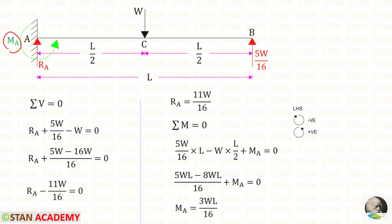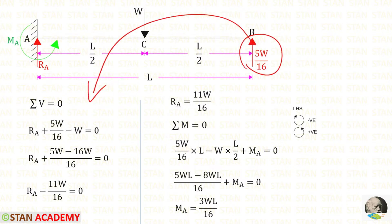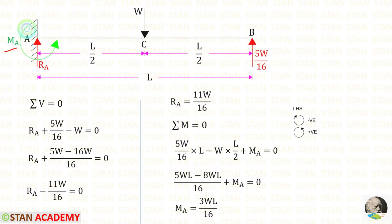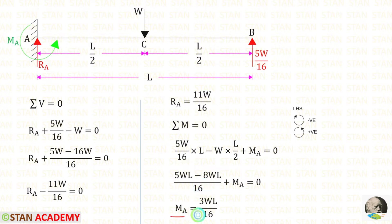Now applying sigma M = 0 to find MA. Taking moments about point A and moving towards the left-hand side: clockwise is negative, anti-clockwise is positive. Rb acts anti-clockwise at distance L (positive), load W acts clockwise at distance L/2 (negative). Assuming MA acts anti-clockwise (positive) and taking LCM of 16, we get a positive value for MA. This confirms our assumption — MA acts in the anti-clockwise direction.